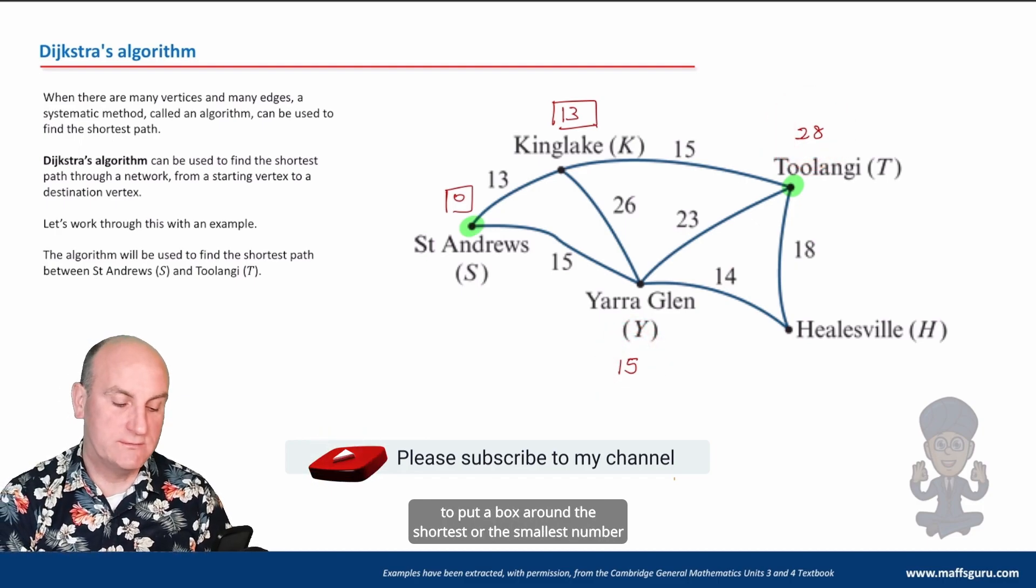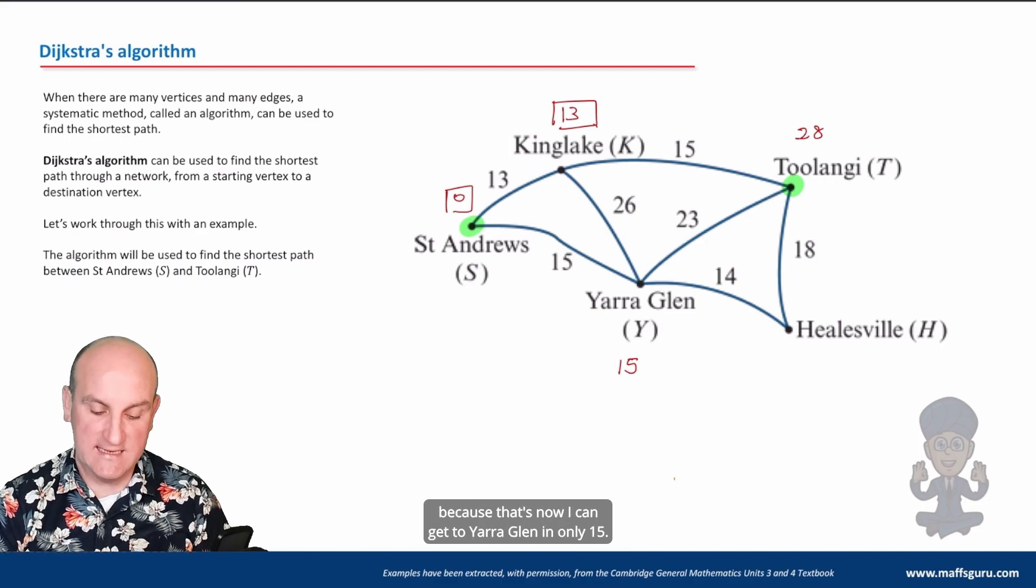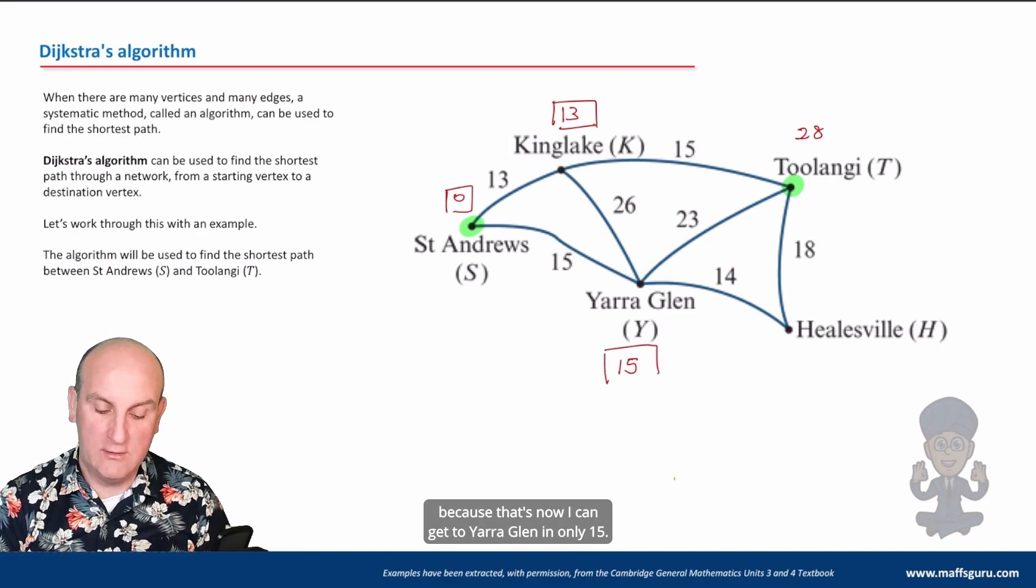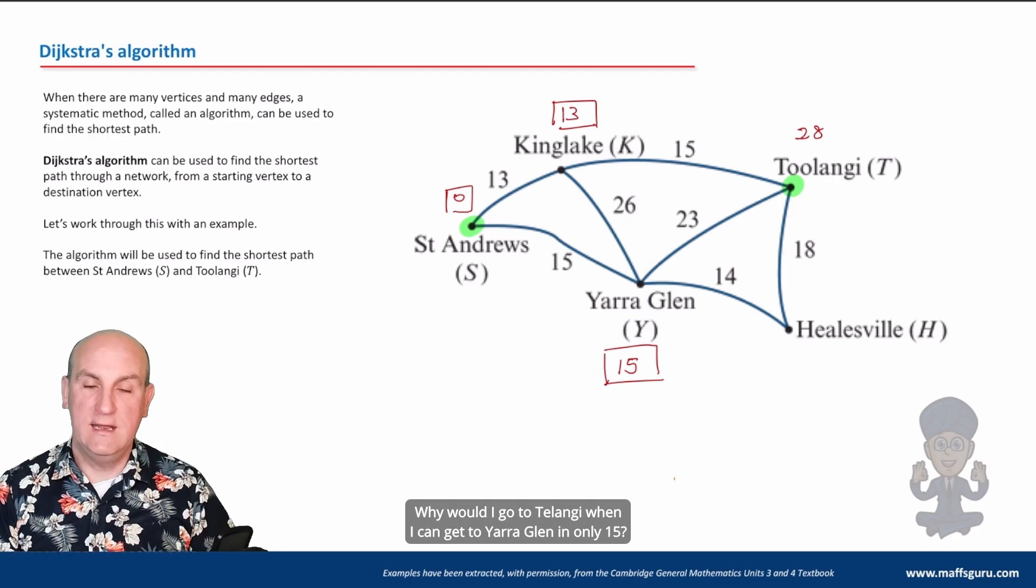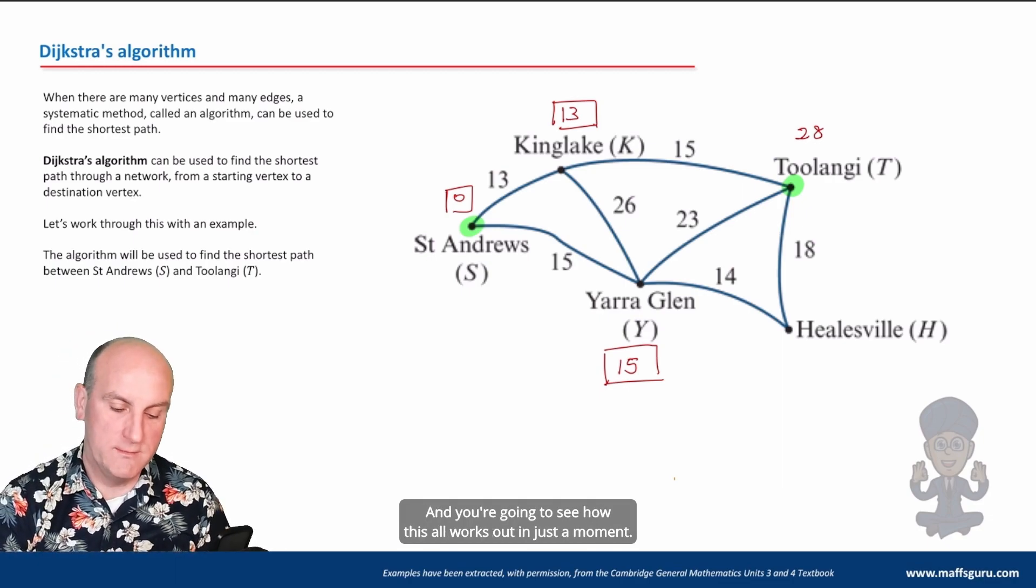Have I now exhausted all of the ways leaving Kinglake? I have. And I've got now a 28 and I've got a 15, and I'm going to put a box around the shortest or the smallest number because that's now—I can get to Yarra Glen in only 15. Why would I go to Toolangi when I can get to Yarra Glen in only 15? And you're going to see how this all works out in just a moment.